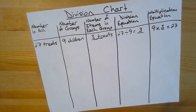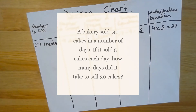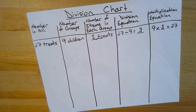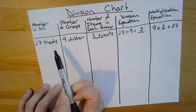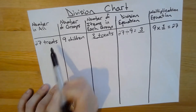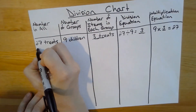Let's practice with another problem. A bakery sold 30 cakes in a number of days. If it sold five cakes each day, how many days did it take to sell 30 cakes? So we can set up this problem the same way. Do I know my total number? Yes, I know the bakery sold 30 cakes. That's my number in all.